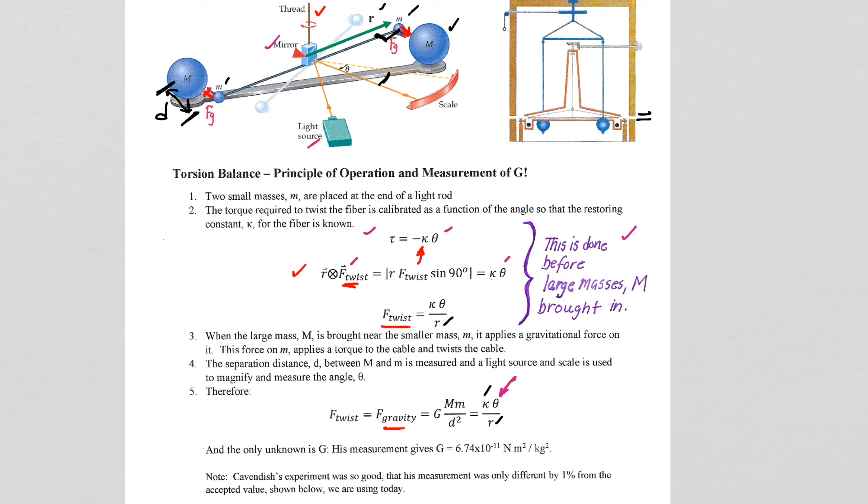And now everything is known. The only unknown is going to be the gravitational G. Because big M, remember, is not the mass of the Earth. That's his lead sphere. So he knows everything, right? He knows the M, the capital M. He knows the little m. The d is known. That's measurable.